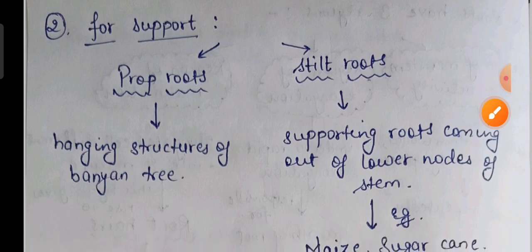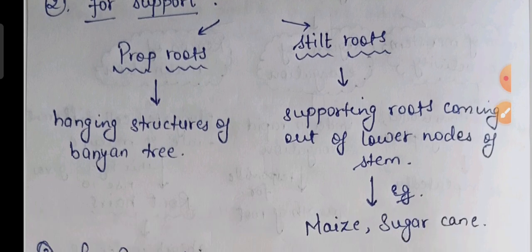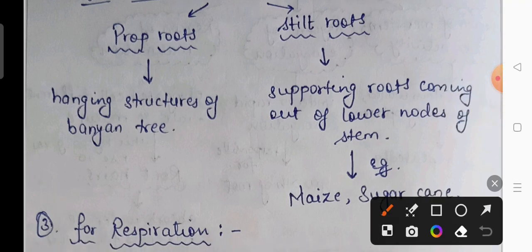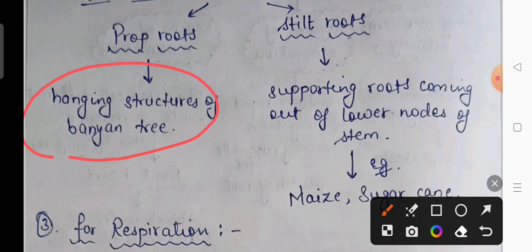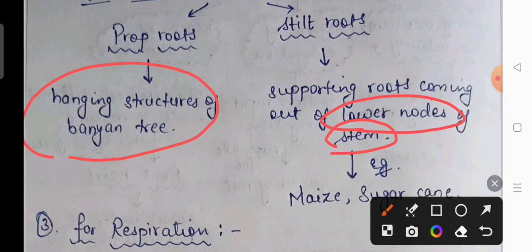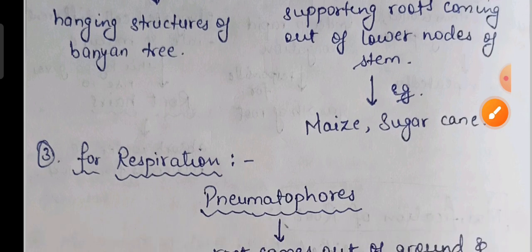The next function is support. For support, there are two types of roots: prop roots and stilt roots. Prop roots are overhanging structures seen generally in banyan trees, helping to support the plant. Stilt roots are supporting roots that arise from the lower nodes of the stem. They are called stilt roots and are seen in maize and sugarcane. Both prop roots and stilt roots function to provide additional support to the plant.